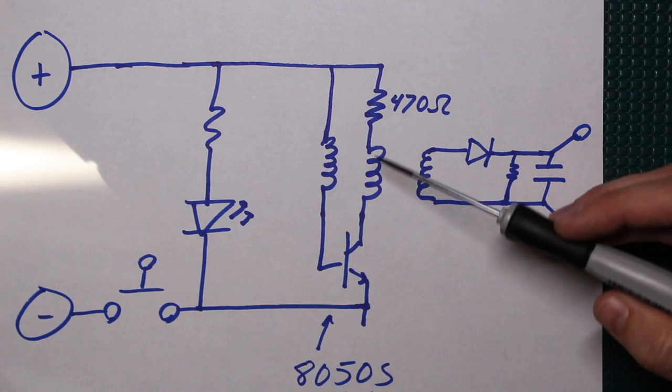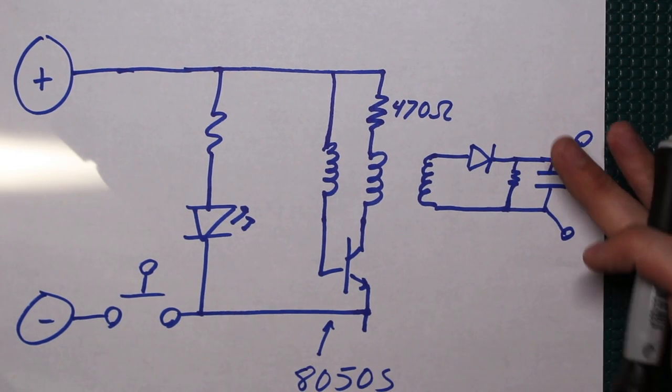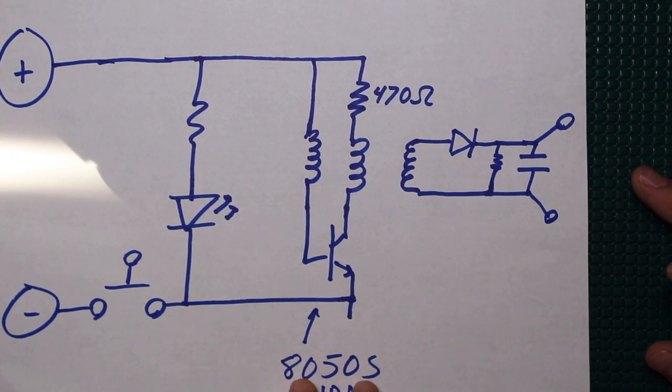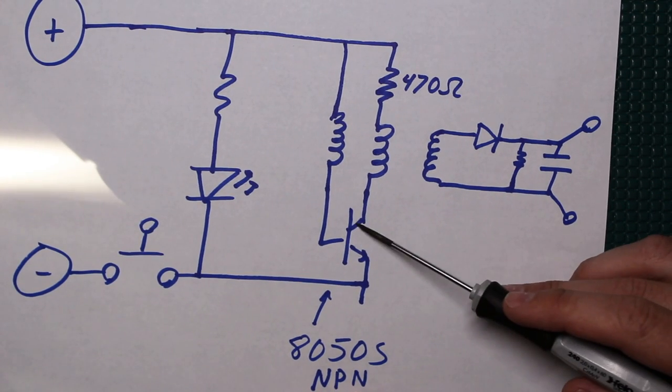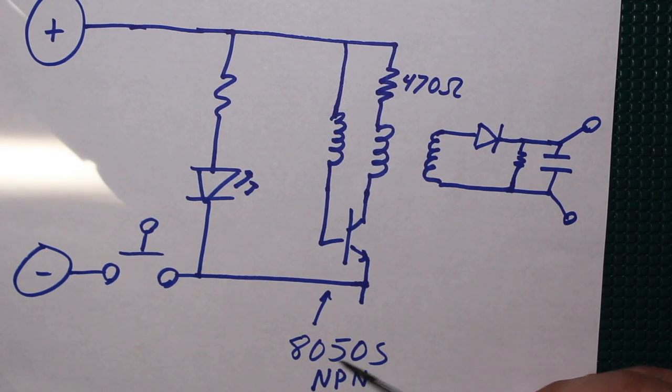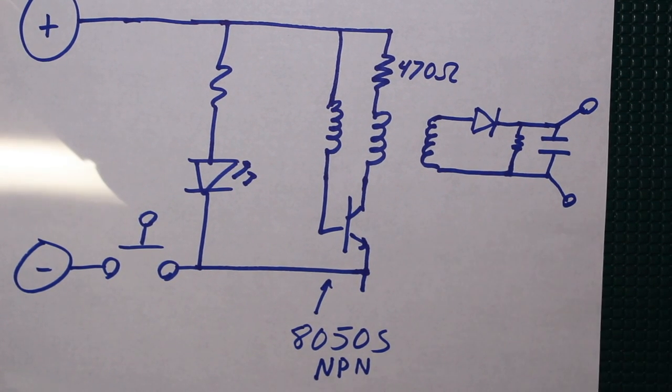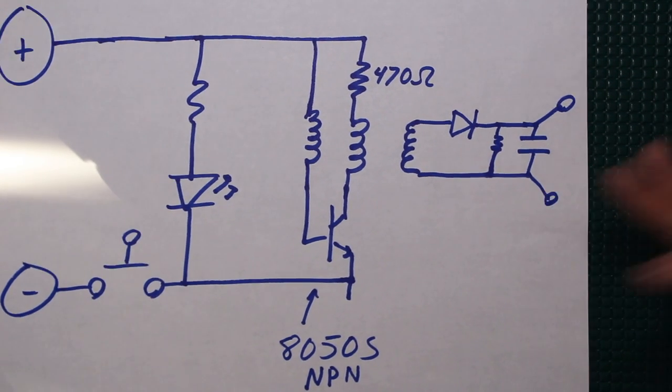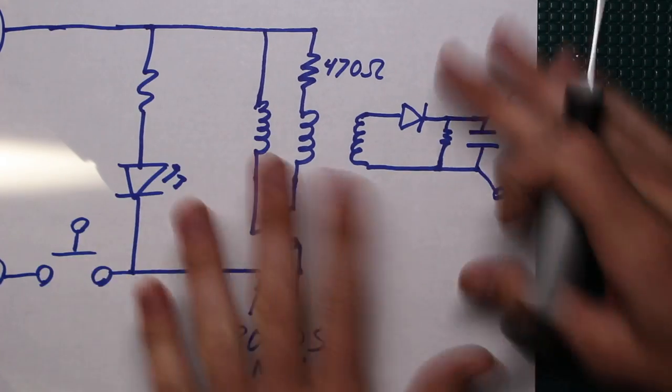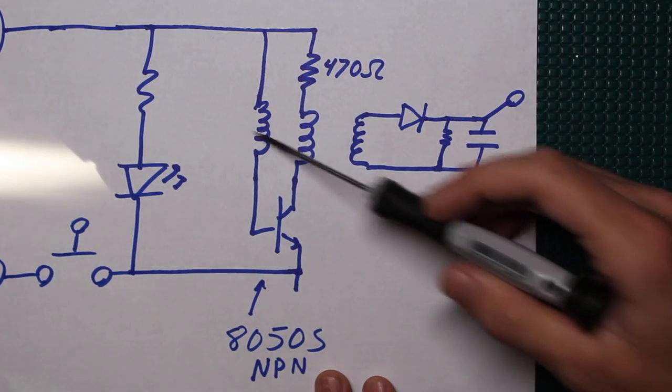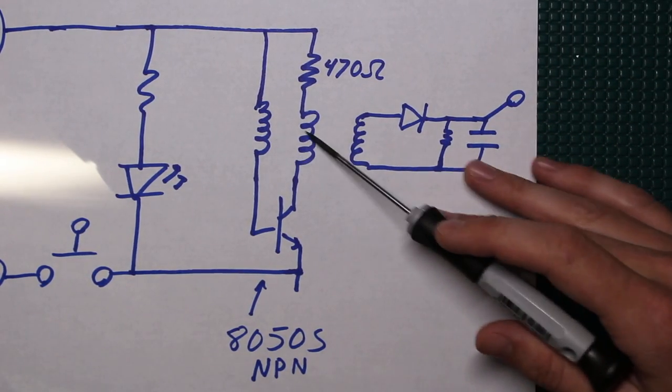Typically you would see some sort of series resistance in line with the base of the transistor here. So maybe that's actually a flaw in this circuit design, I don't know. Or possibly that series resistance is built into this 8050S bipolar NPN transistor, maybe. But this is the way it's hooked up and we've got the joule thief type oscillator here.